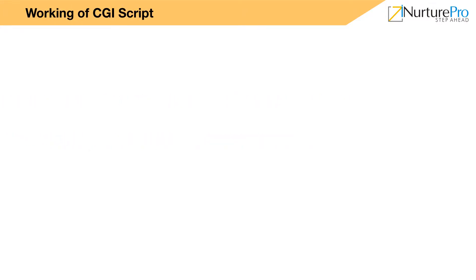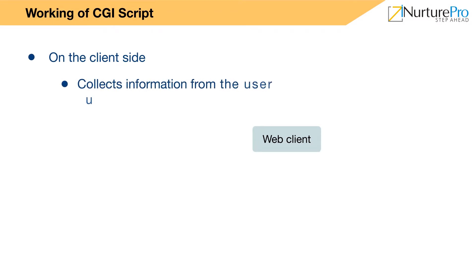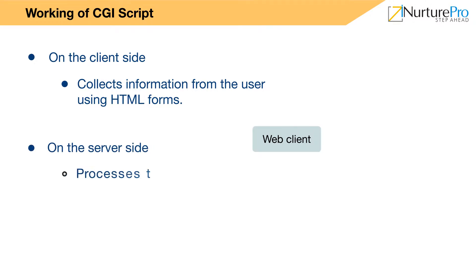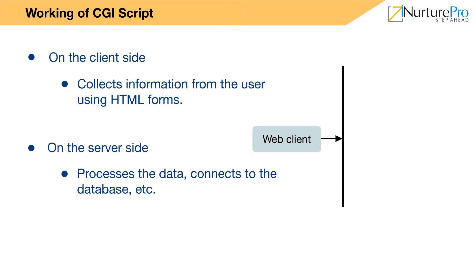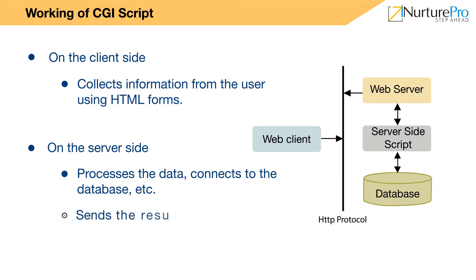Let's see the working of a CGI script. The image represents the CGI architecture. On the client side, information is collected from the user using HTML forms. On the server side, the data is processed, the server connects to the database, and sends the result back to the client.